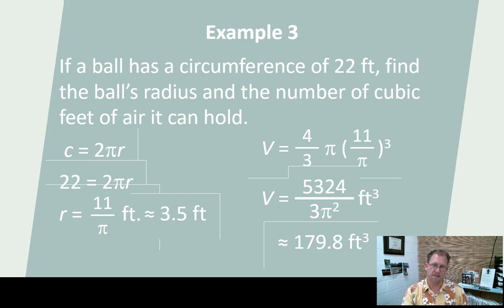Circumference is known, 22 feet. C is 22 feet. C is 2 pi r. We're going to solve for r. And we're going to find that the radius is 3.5 feet. All right. We're going to actually leave it as the simplified irrational, the 11 over pi.